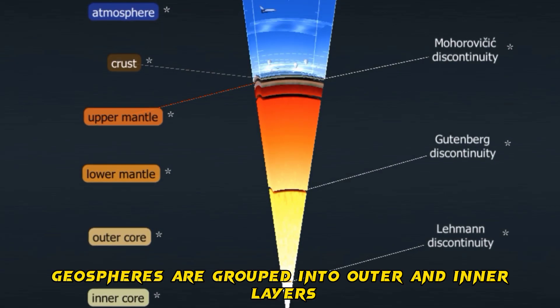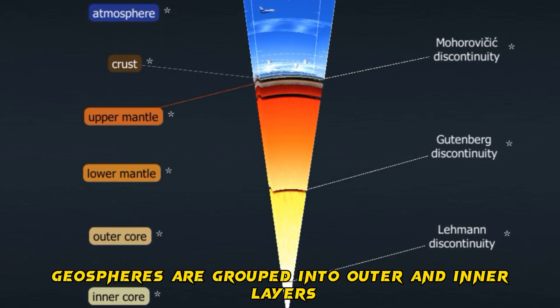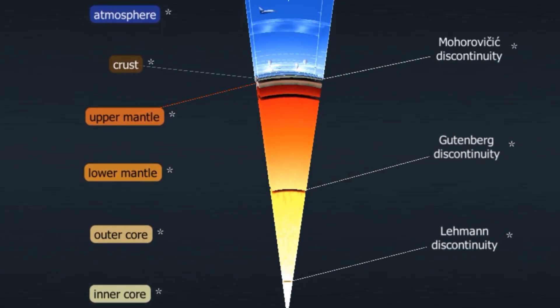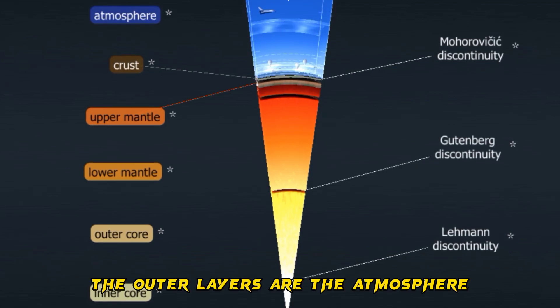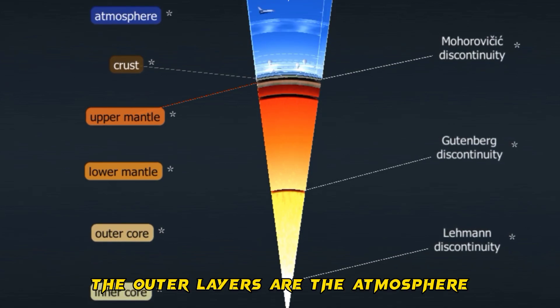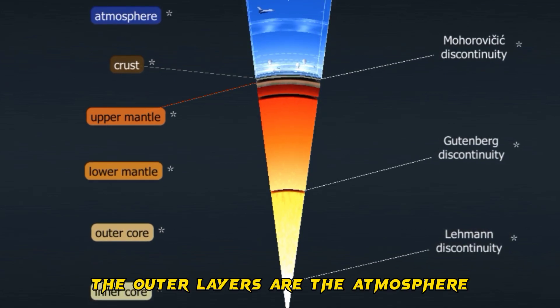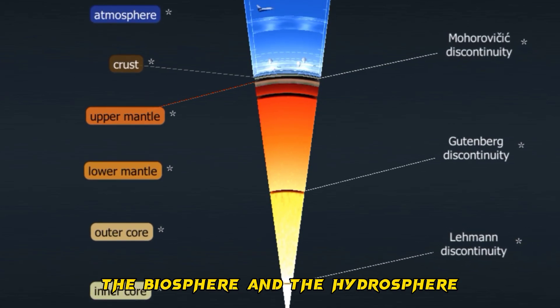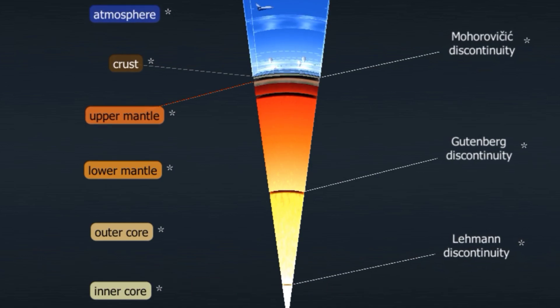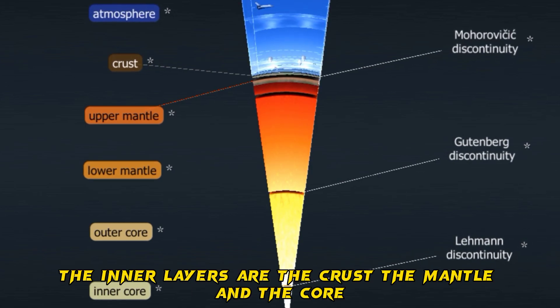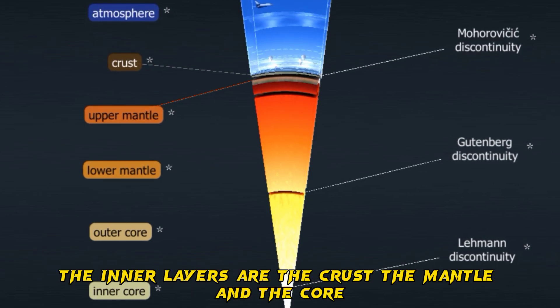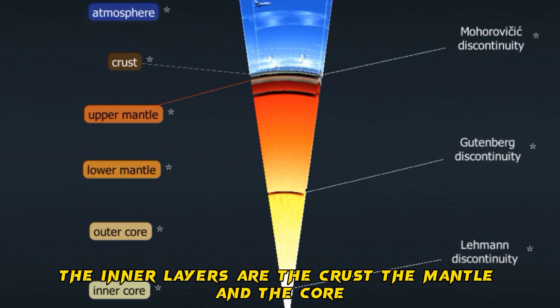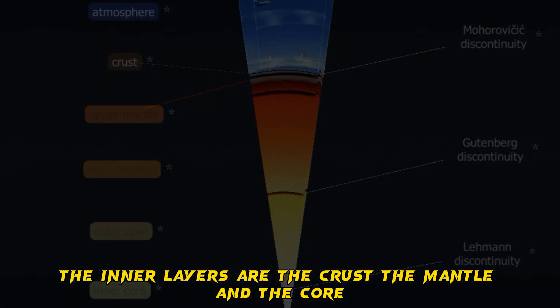Geospheres are grouped into outer and inner layers. The outer layers are the atmosphere, the biosphere, and the hydrosphere. The inner layers are the crust, the mantle, and the core.